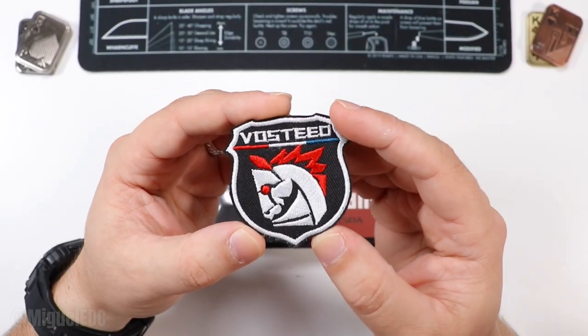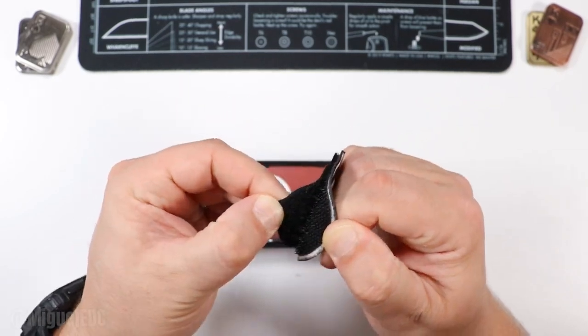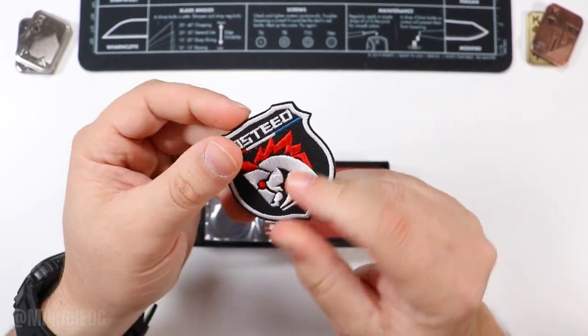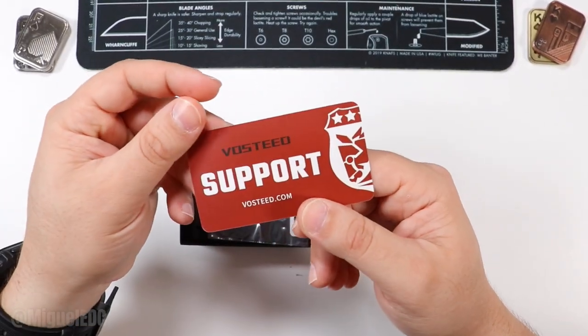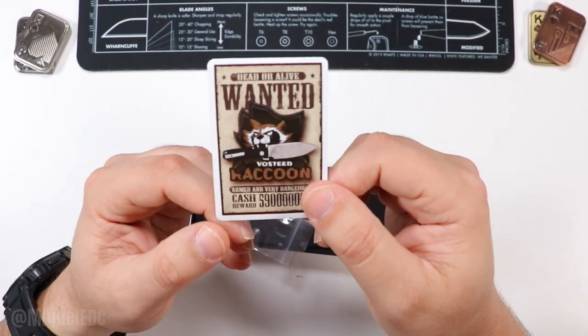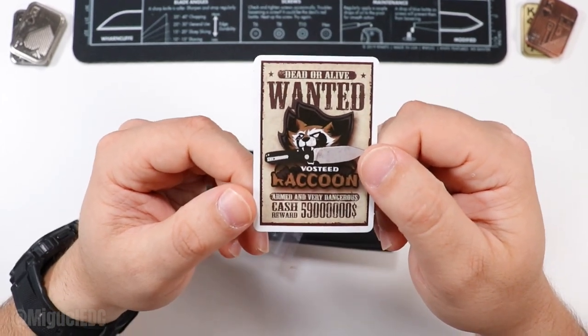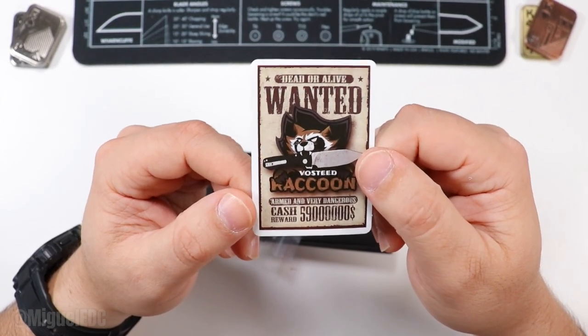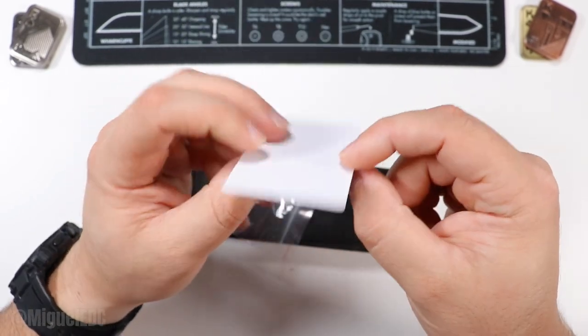Vosteed horse logo here embroidered with some nice Velcro. That's nice and ready to go on your EDC pouch or bag. We have the Vosteed support card. We got the Dead or Alive Wanted Vosteed Raccoon with the cash reward. Man, that's a lot of money. I could use that money right now.